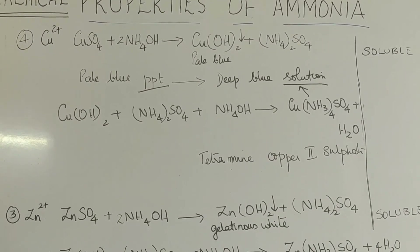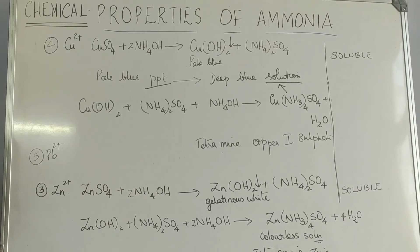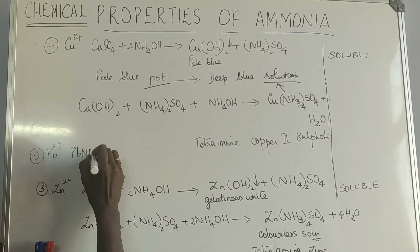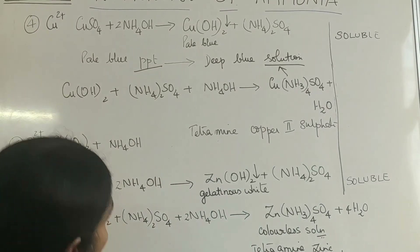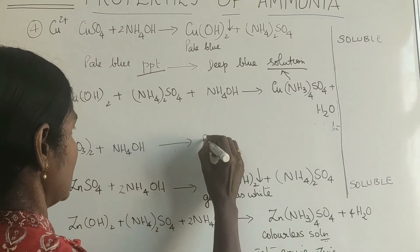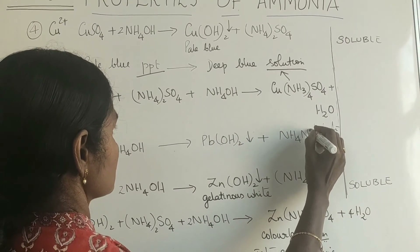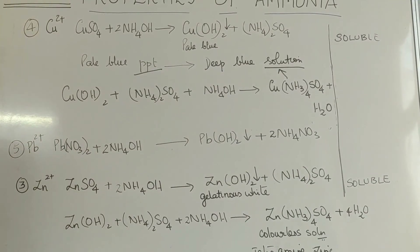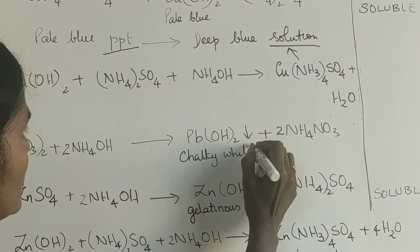The last one is lead. We use the only soluble lead salt, lead nitrate, which reacts with ammonium hydroxide to give lead hydroxide — a chalky white precipitate which is insoluble in excess.